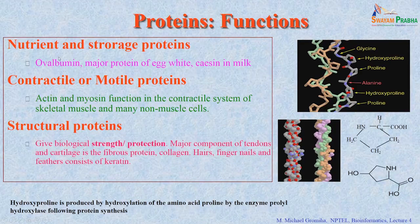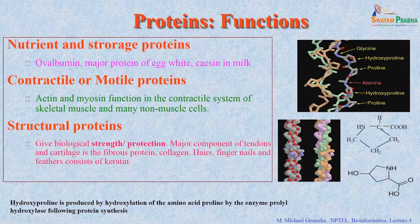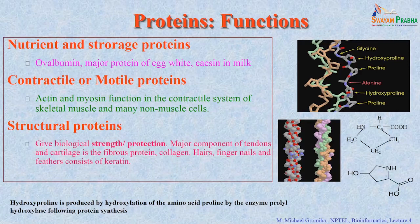Then there are nutrient proteins. When people talk about proteins, they often think of food sources like beans, which contain a lot of proteins. There are various nutrient proteins like ovalbumin, available in egg white, and casein in milk. There are various proteins with different functions in living systems, and we have these proteins for the proper functioning of our body and all cellular processes.